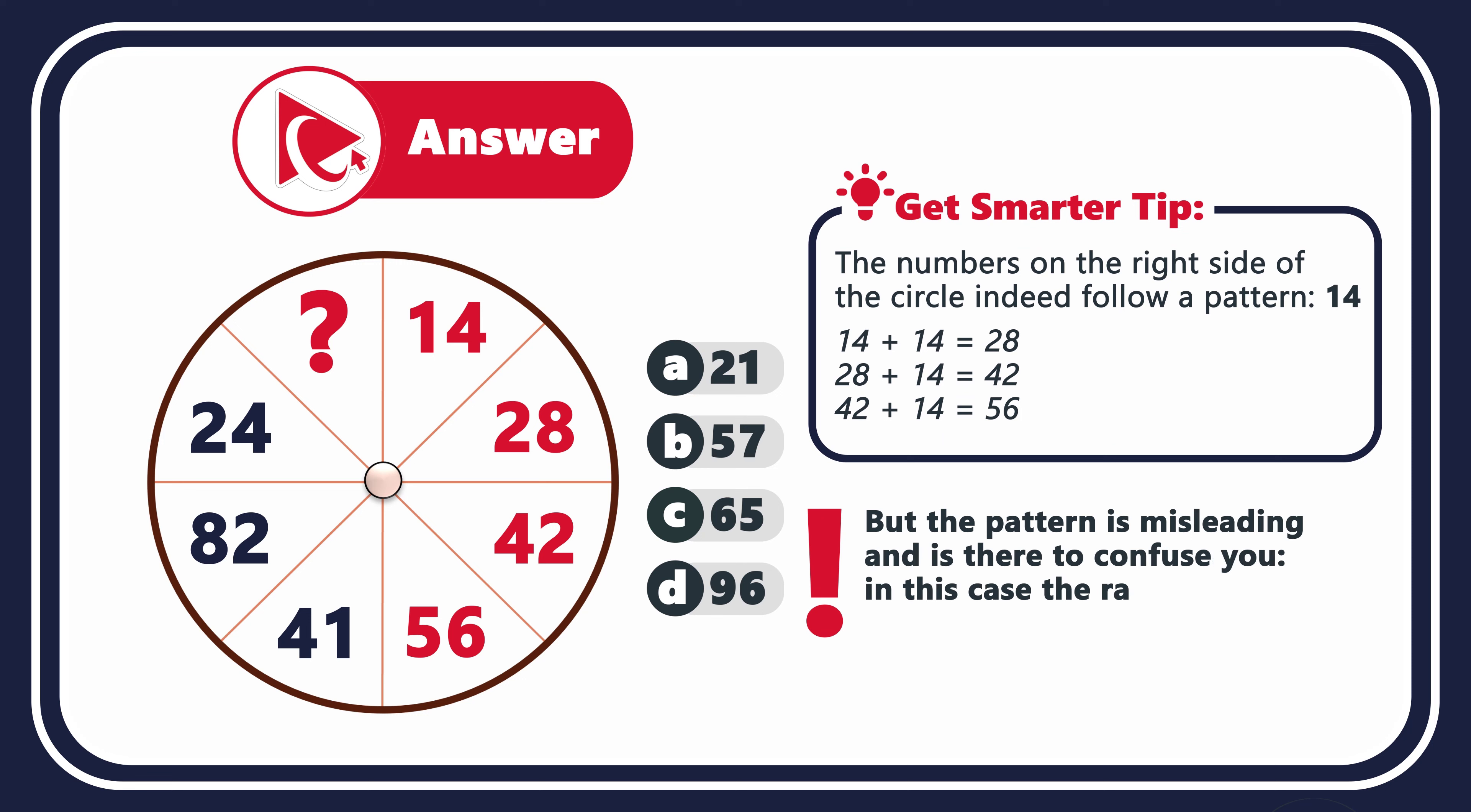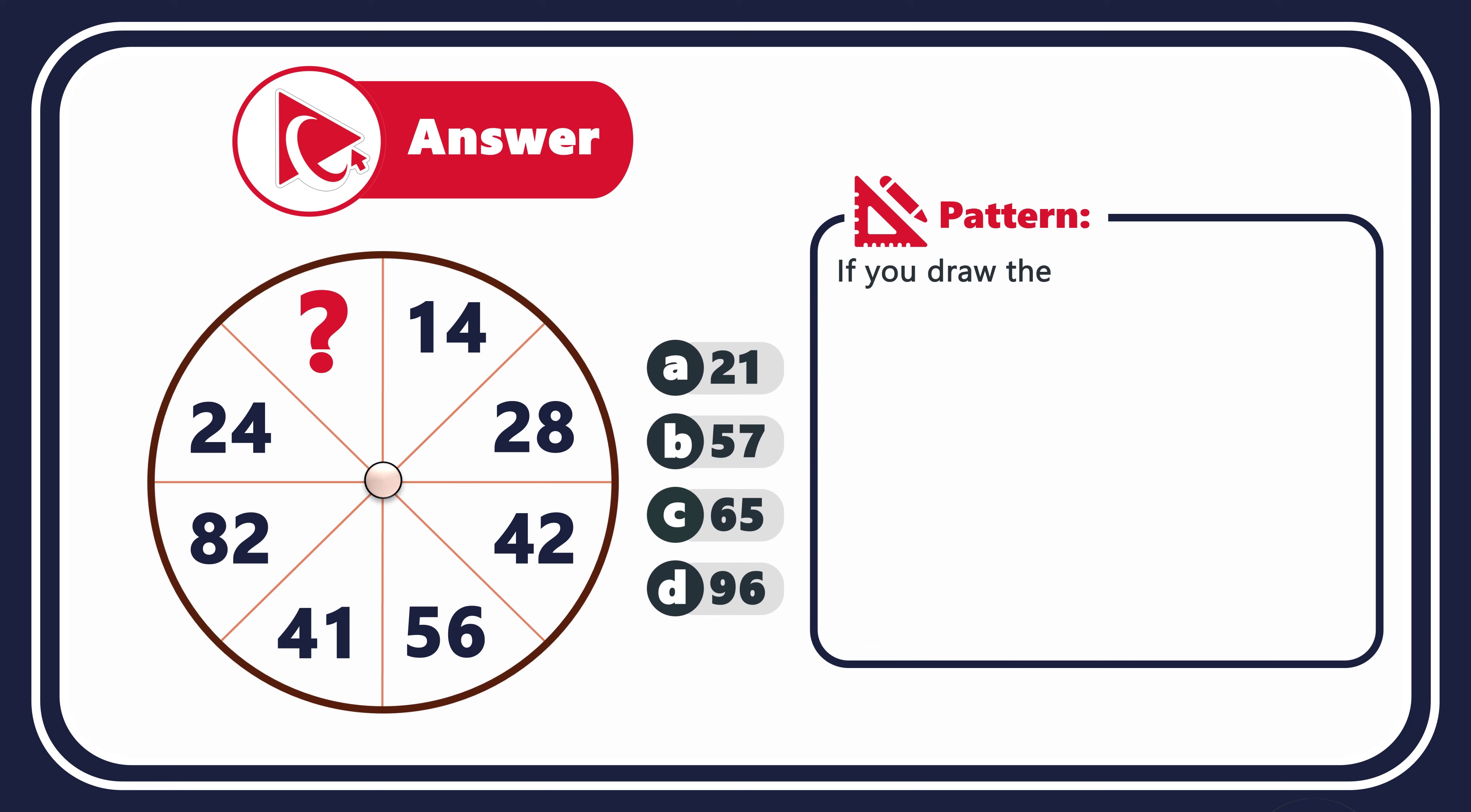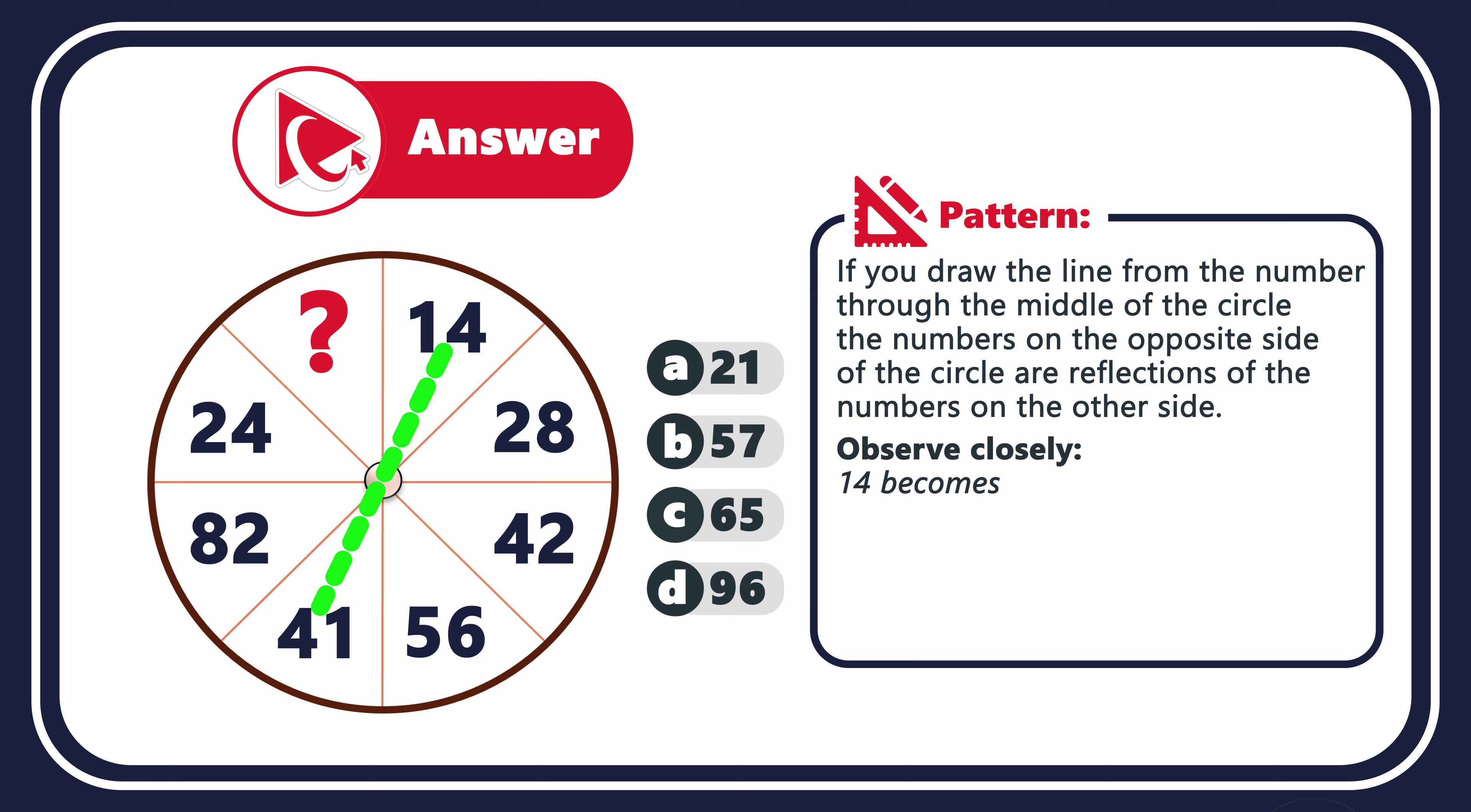In this case, the random numbers could have been used as well. So what is the right solution? Take a look at the circle in the middle. If you draw the line from the number through the middle of the circle, the numbers on the opposite side of the circle are reflections of the numbers on the other side. Let's take a close look. For example, 14 becomes 41, 28 becomes 82, 42 becomes 24, and 56 then becomes 65. So the correct answer here is choice C: 65.